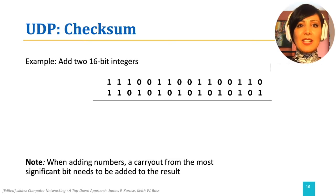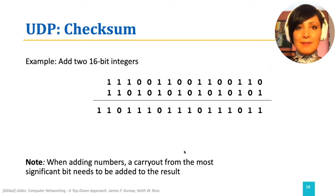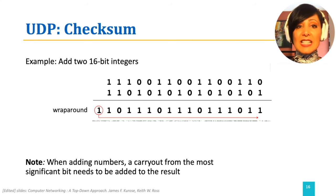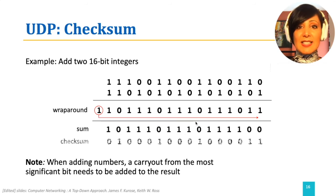For checksum computation, the UDP segment including all header fields is treated as a sequence of 16-bit words, and those words are bitwise added together. We add the bits starting from the least significant bit. The carryout of the summation from the most significant bit is wrapped around to the least significant bit, yielding the sum, and computing the one's complement yields the final checksum.